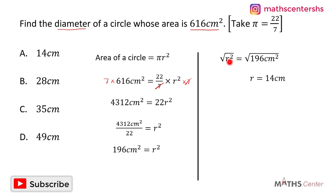Square root of r squared gives us r, and square root of 196 cm squared gives us 14 cm. So the radius of the circle is 14 cm.